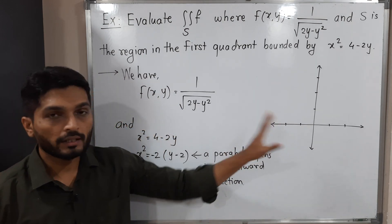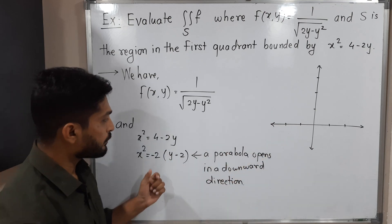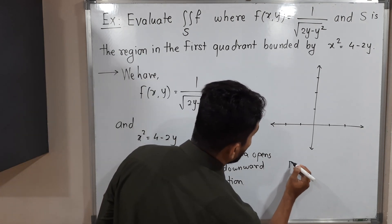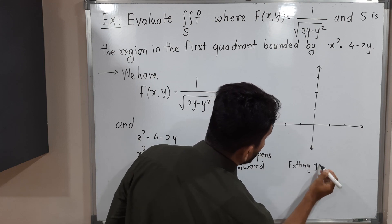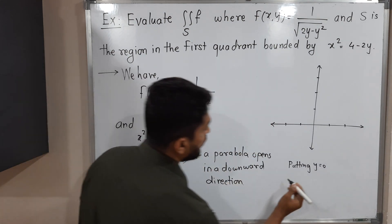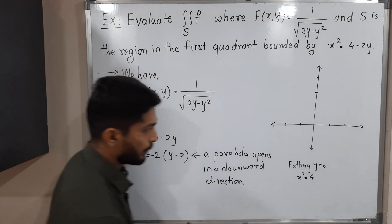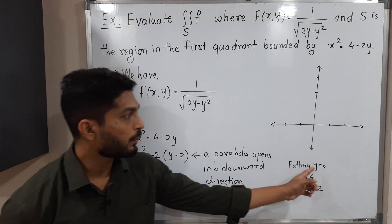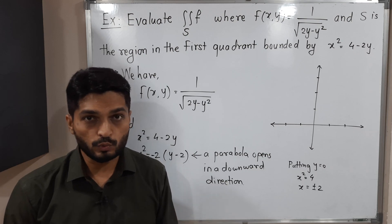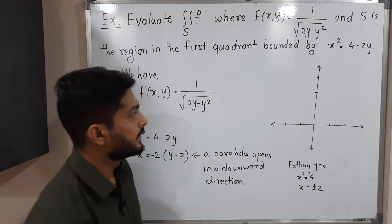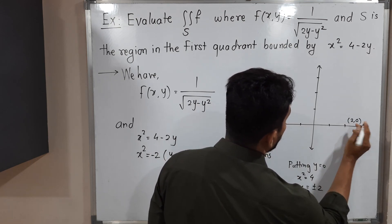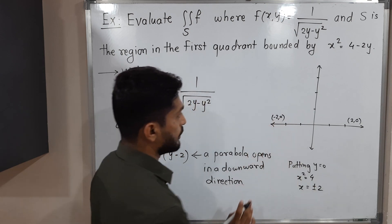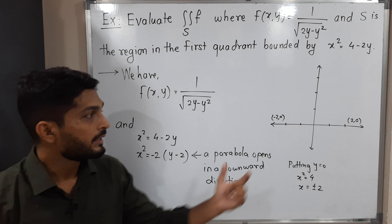To draw the parabola, I will put y = 0. If I put y = 0 in x² = 4 − 2y, we get x² = 4, so x = ±2. That means when y = 0, x is either +2 or −2. So we get two points: (2, 0) and (−2, 0). The given parabola passes through these two points.